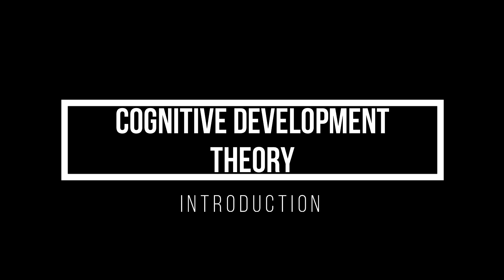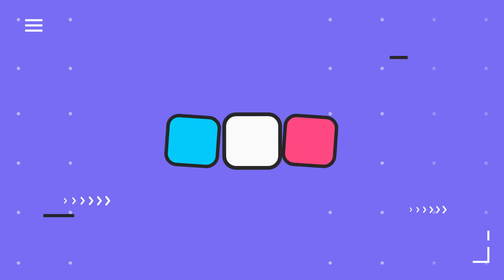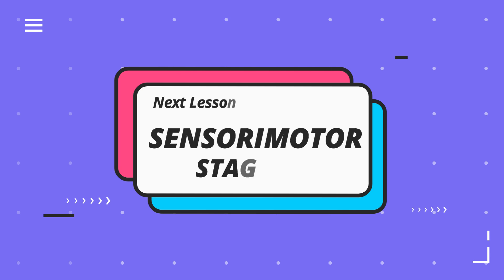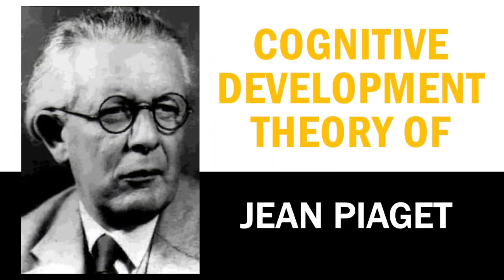That's all for this introduction to Piaget's cognitive development theory. I hope this brief overview of the basic concepts has piqued your interest. Remember that these processes — schemas, assimilation, accommodation, and the balance between equilibrium and disequilibrium — are happening constantly as children grow and learn. In our next video, we'll focus on the sensorimotor stage, where cognitive development begins from birth. In conclusion, Jean Piaget's theory of cognitive development offers a roadmap for understanding how children grow intellectually. As future teachers, your role will be to support students as they navigate through these stages, helping them adapt, build new schemas, and find balance between what they know and what they're learning.